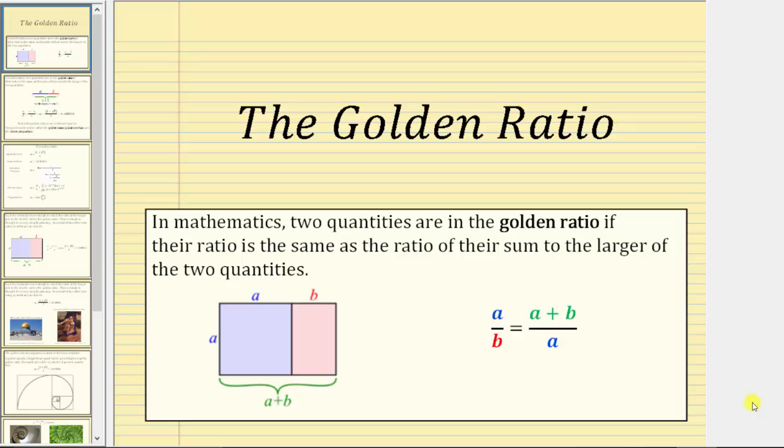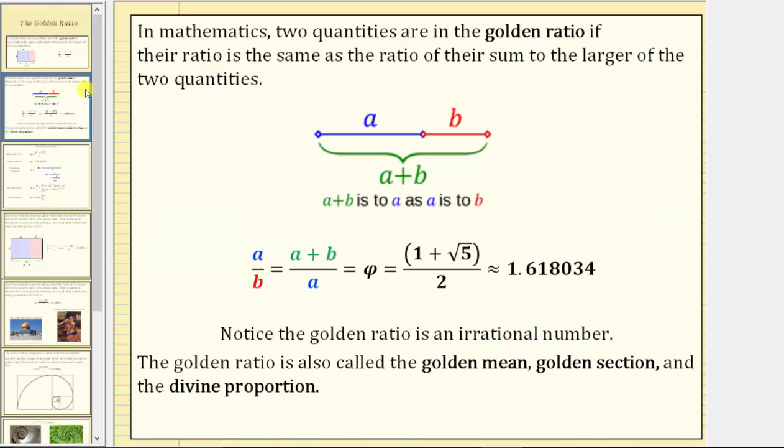Welcome to a presentation on the golden ratio. In mathematics, two quantities are in the golden ratio if their ratio is the same as the ratio of their sum to the larger of the two quantities.